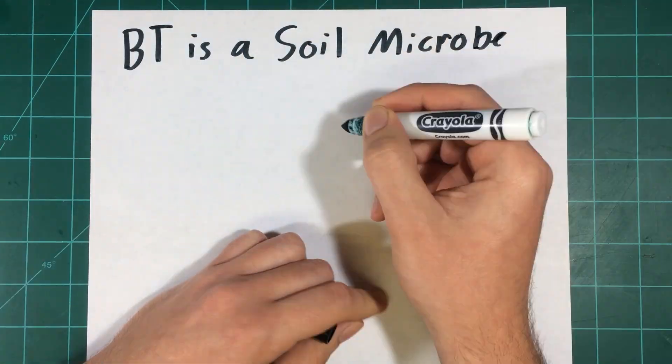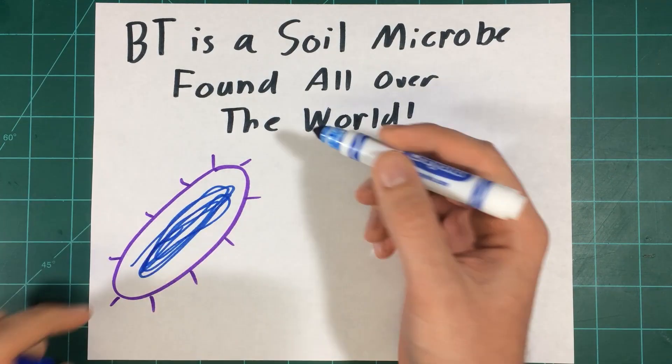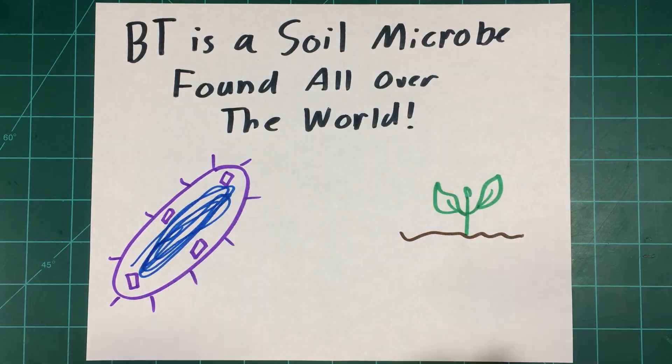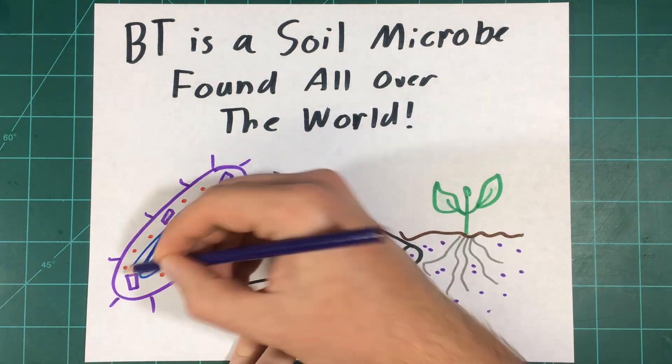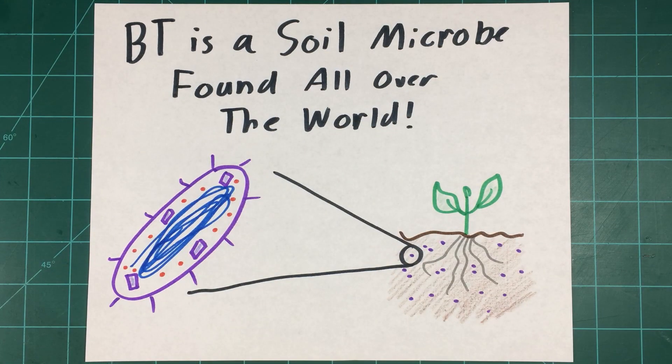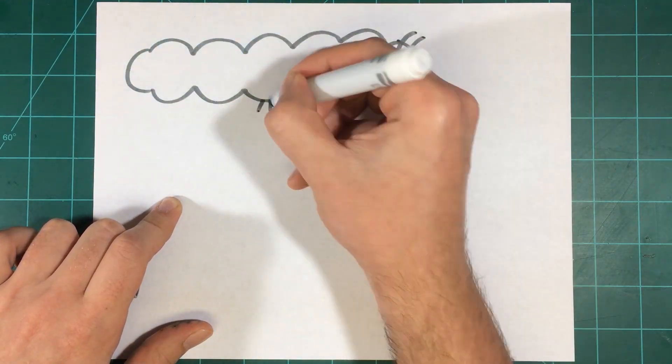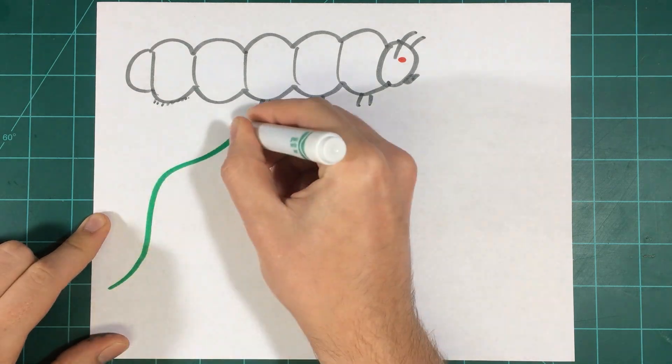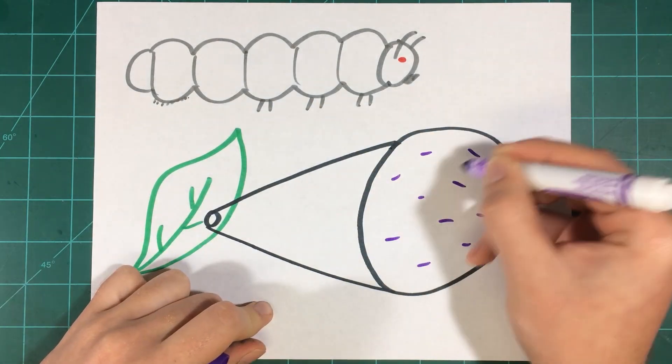So what is BT protein and where does it come from? BT protein is found in a soil microbe that exists almost everywhere in the world called Bacillus thuringiensis. BT protein was found over 100 years ago in East Asia. The people who were farming silkworms for their cocoons noticed that many of their moths were getting sick and even dying after consuming leaves that were dirty and unwashed.